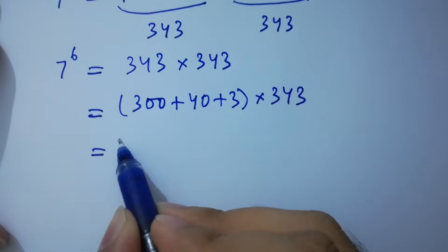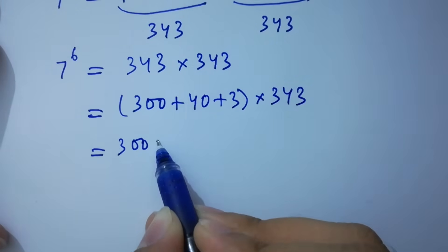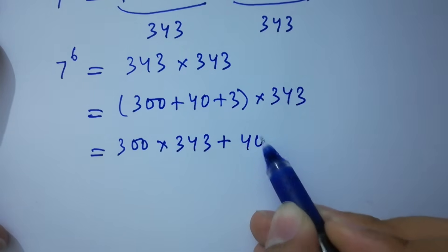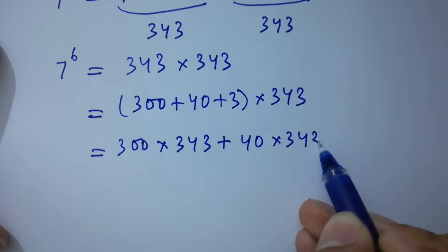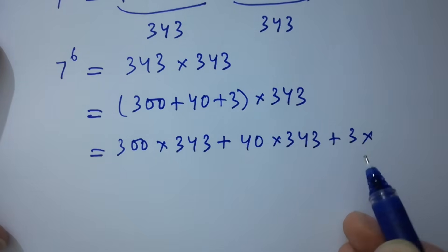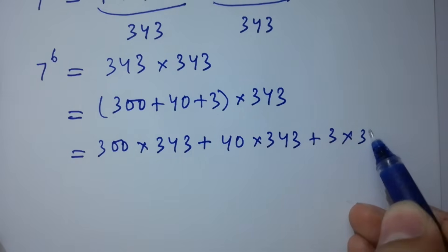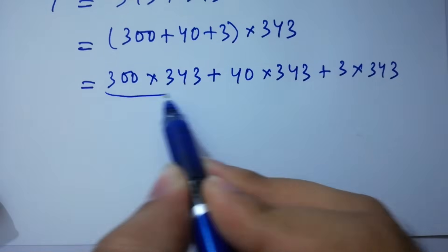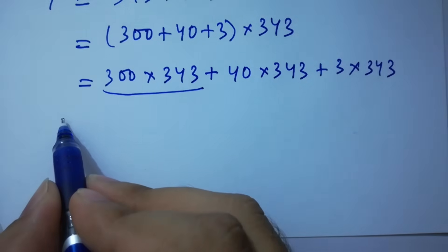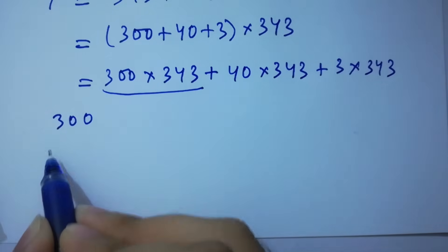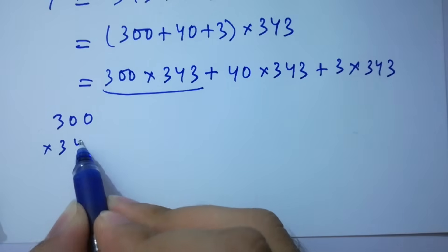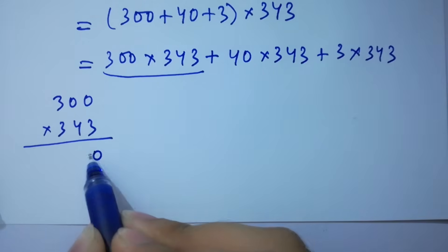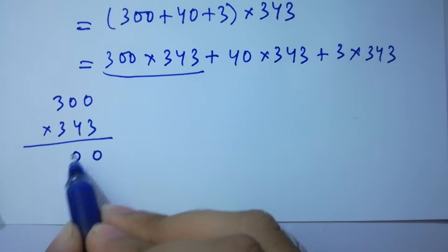Multiply. We have 300 times 343, plus 40 times 343, plus 3 times 343. First of all I'm going to solve 300 times 343. 300 multiplied by 343 gives us 343 written out with the appropriate place values.